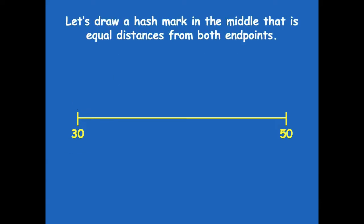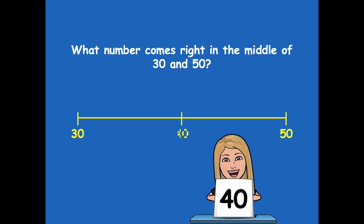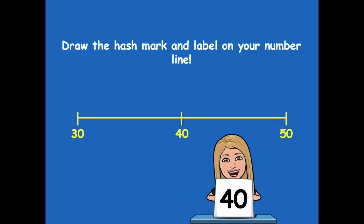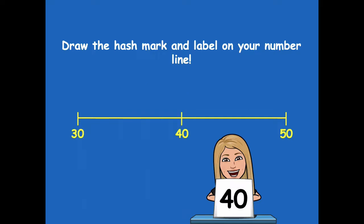Let's draw a hash mark in the middle that is equal distances from both endpoints — we're just trying to find the middle point on our number line. What number comes right in the middle of 30 and 50? Yeah, it's 40. So we can label that on our number line. Draw the hash mark for that middle and label 40. Pause the video, label the middle, add 40, and then click play when you're ready for the next step.